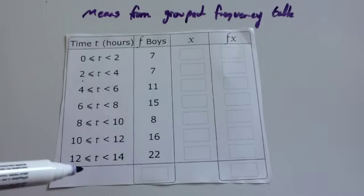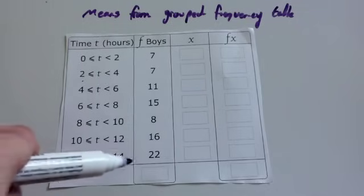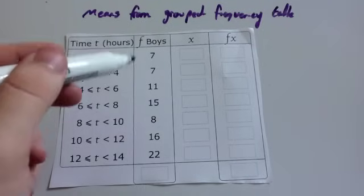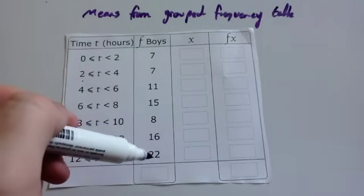All the way to time is bigger than or equal to 12 but less than 14 hours. We've got the number of boys: 7, 7, 11, 15, 8, 16, and 22.